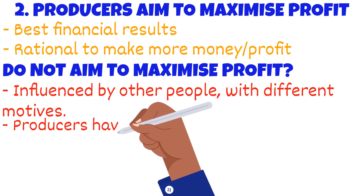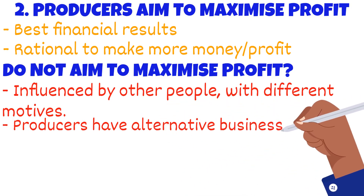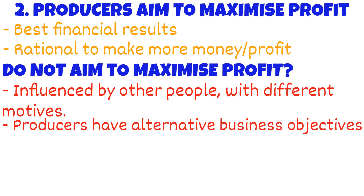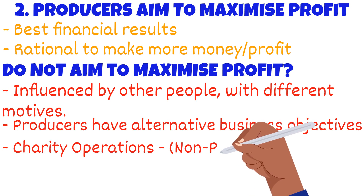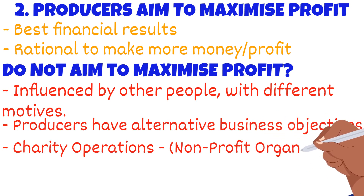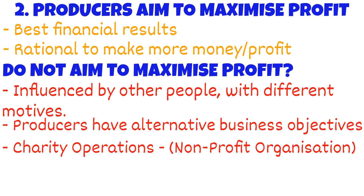Some producers have alternative business objectives. Although profit may be important to them, other issues may be important too, so consequently they focus on other objectives, making it not possible for the producer to maximize profit. Some commercial enterprises operate as charities. They are sometimes called non-profit organizations. Some examples include UNICEF.